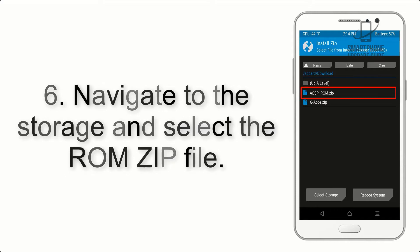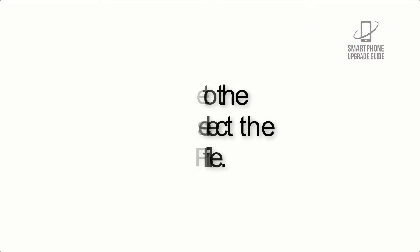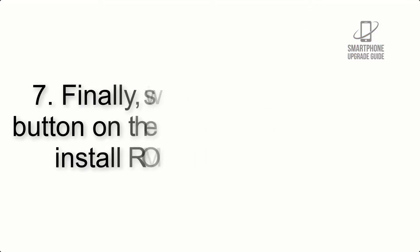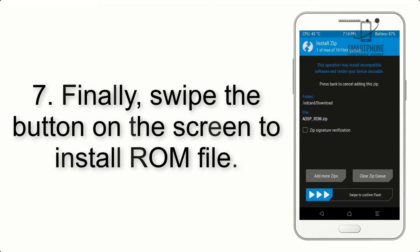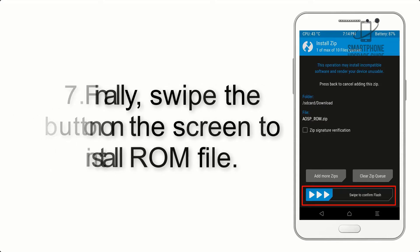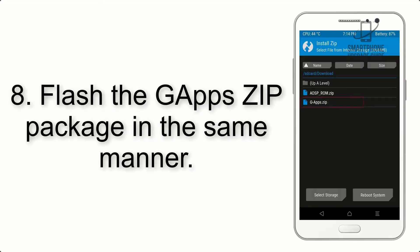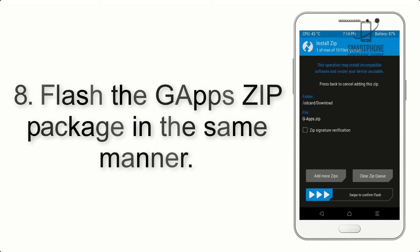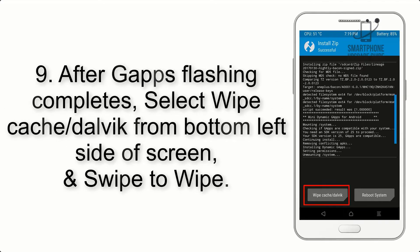Step 5: Go back to the recovery main screen and tap on the Install button. Step 6: Navigate to the storage and select the ROM zip file. Step 7: Finally, swipe the button on the screen to install the ROM file. Step 8: Flash the GApps zip package in the same manner.